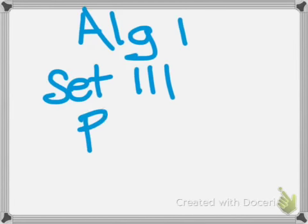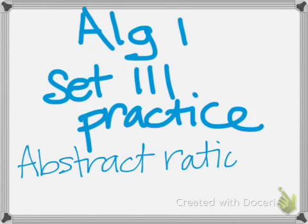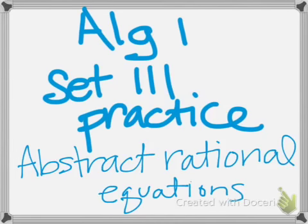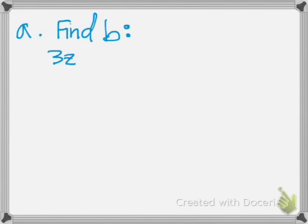Okay, this is Algebra 1 set 111 practice problems for abstract rational equations. The first problem: 3z over m plus n over b equals f.